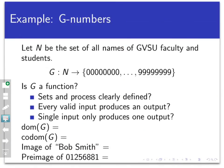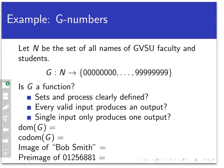Here's another example: the G-number model. The G number is an eight-digit ID code assigned to all faculty and students at Grand Valley State University. Let N be the set of all names of GVSU faculty and students. The function that changes names to G numbers we'll call G, with domain N and co-domain the set of all eight-digit integers from 0 to 99,999,999. Is G a function? Are the sets and process clearly defined? Yes. Does every valid input produce an output? Yes, every student and faculty member has a G number. Does a single input produce only one output? Yes — a student with two different G numbers would be extremely confusing administratively.